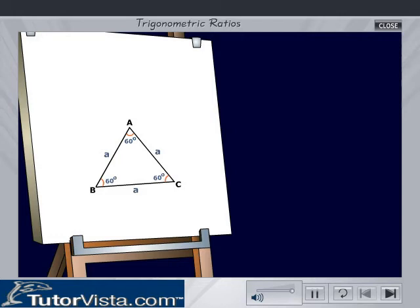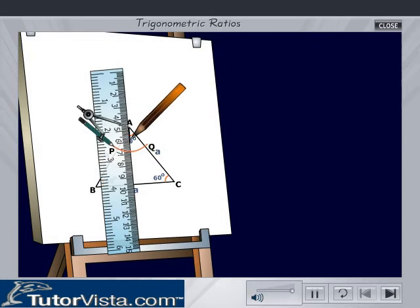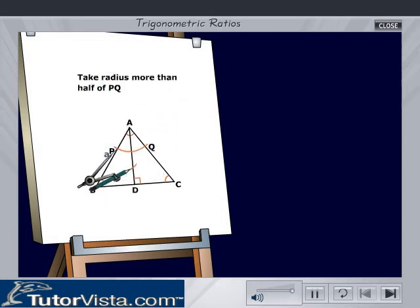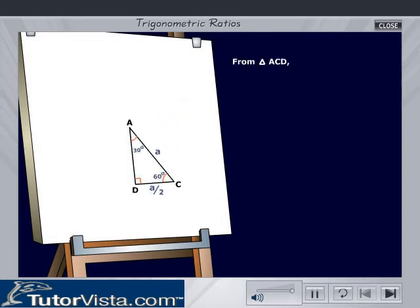Draw an angular bisector to angle A and join A to D. From triangle ACD, we can find the value of AD by using the Pythagoras theorem.